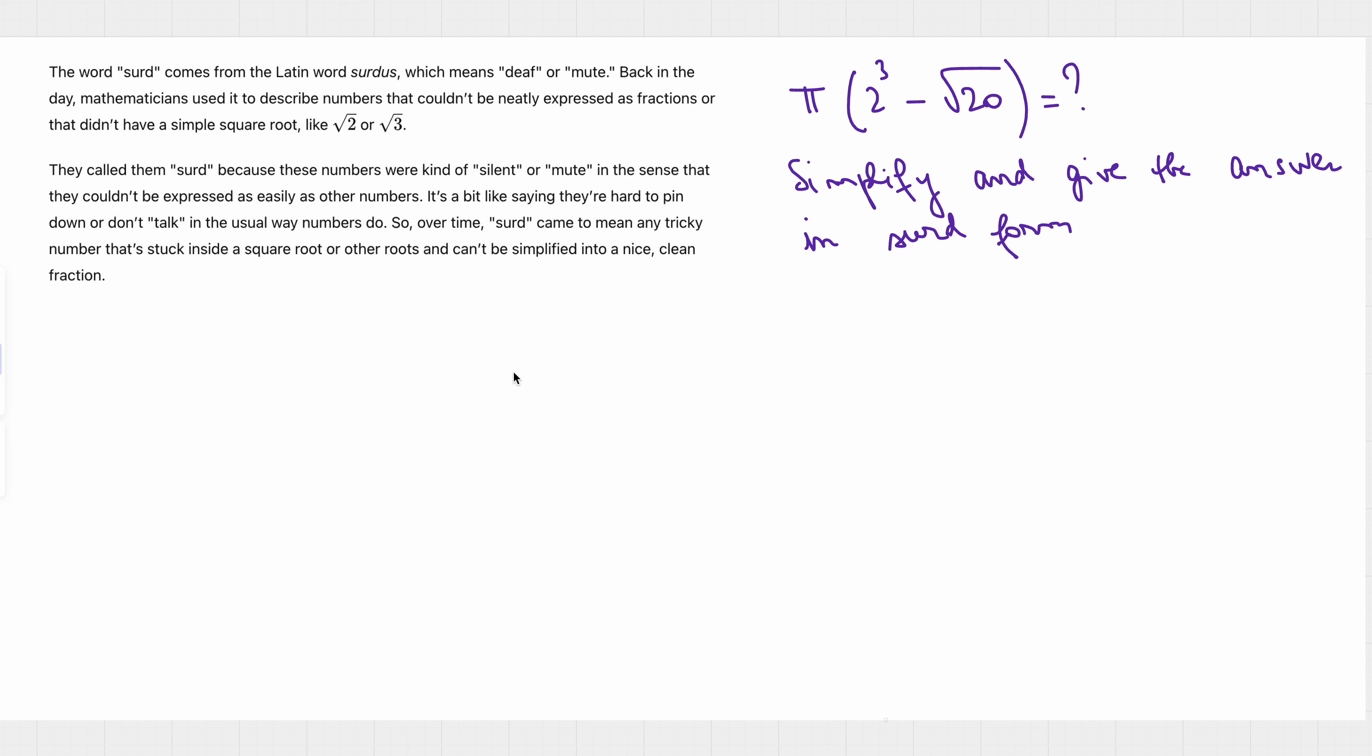They called them surd because these numbers were kind of silent or mute in the sense that they couldn't be expressed as easily as other numbers. It's a bit like saying they are hard to pin down or don't talk in the usual way numbers do.